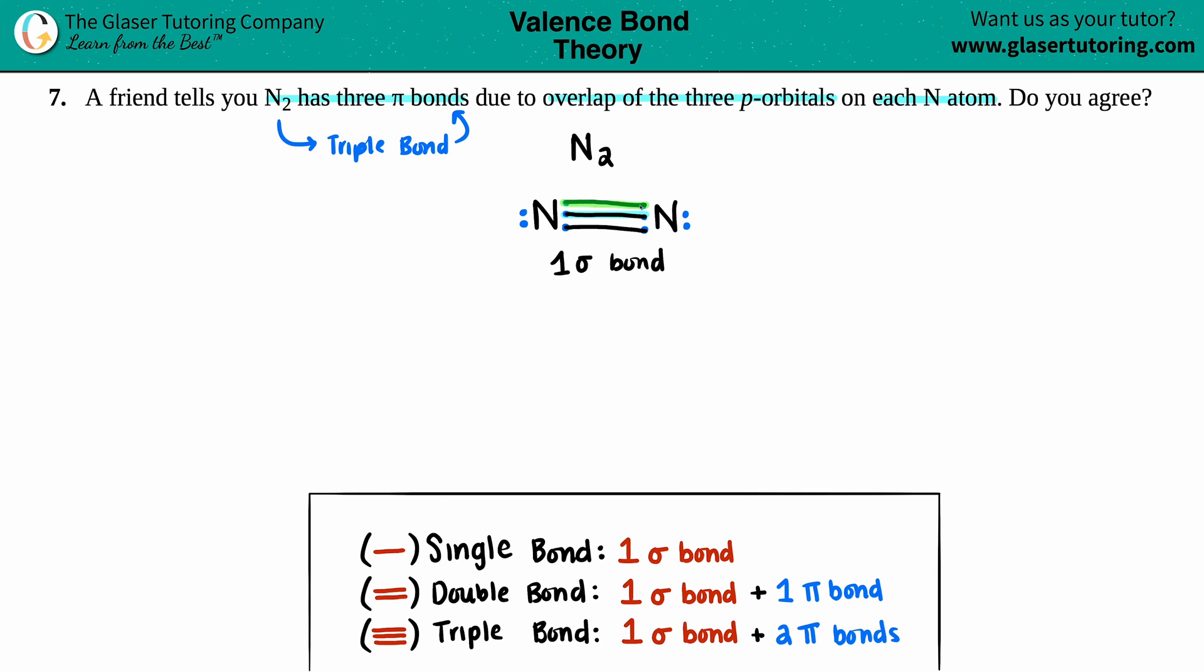And then the other ones that are protecting the sigma bond, one on top and one on the bottom, those are your two pi bonds. And they do not run from nuclei to nuclei straight through, they're on the tops and the bottoms of the nuclei between the two nitrogen atoms.